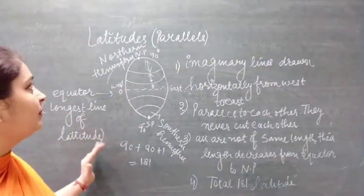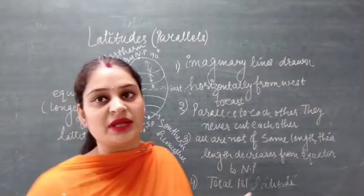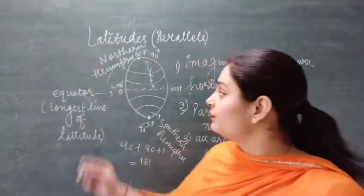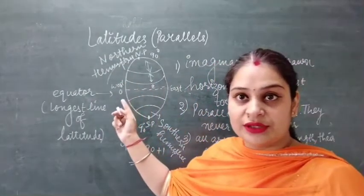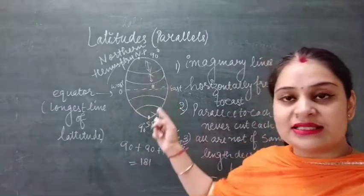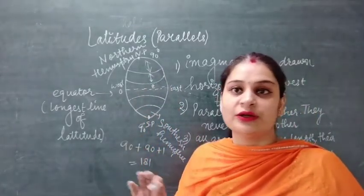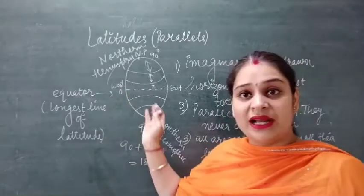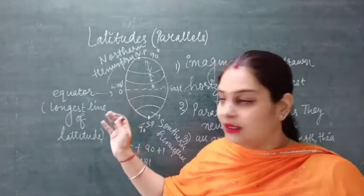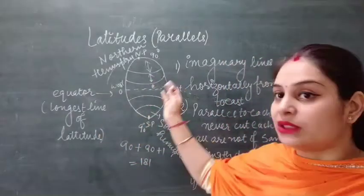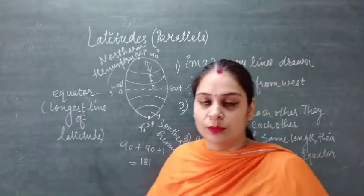So to summarize: latitudes are imaginary lines drawn from west to east. The equator is the largest line of latitude. These lines are parallel to each other and never cut each other, and there are a total of 181 latitudes on the globe.